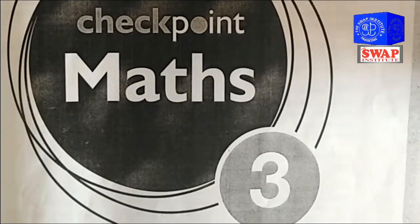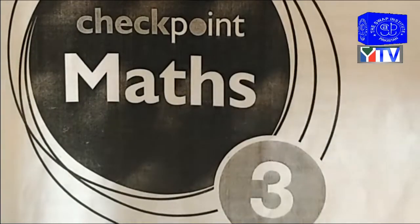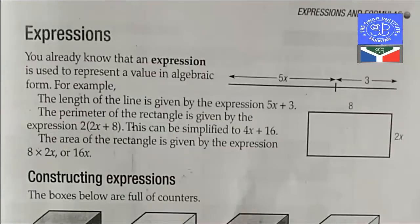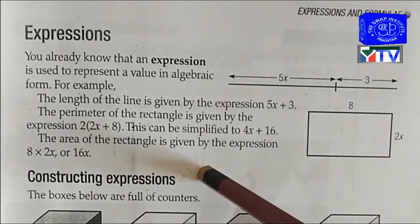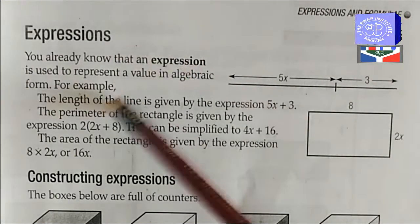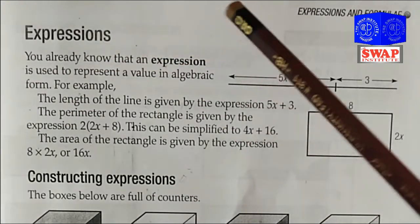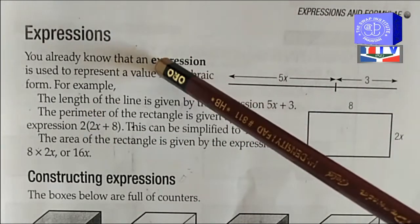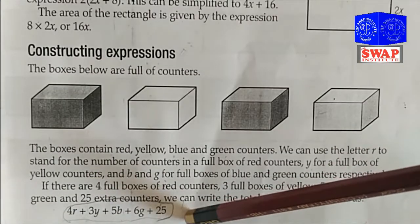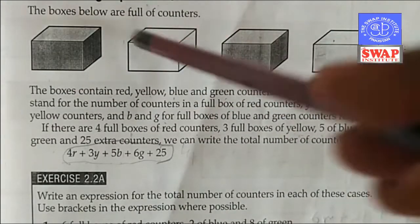Assalamu alaikum students, it's your math class and we are learning Cambridge checkpoint mastery. We have started chapter number two, so today we will do exercise 2.2a from our book, which is about constructing expressions. An expression is used to represent a value in algebraic form. So whenever we write something in algebraic form, this is called an expression. You can see its definition here and how we construct expressions, explained on page number nineteen.